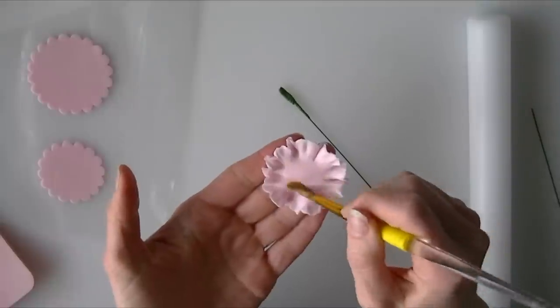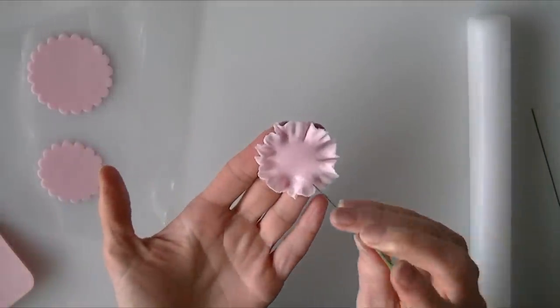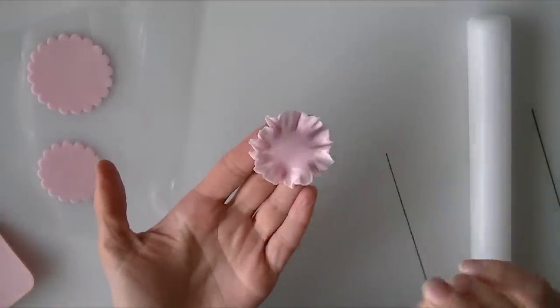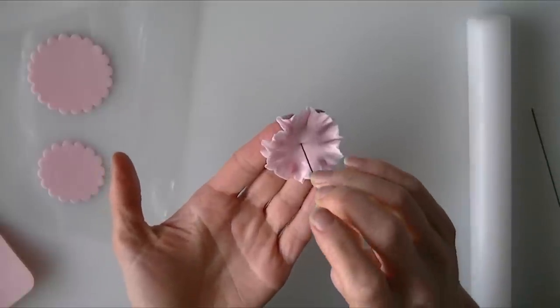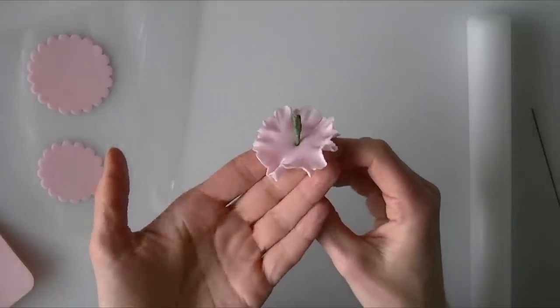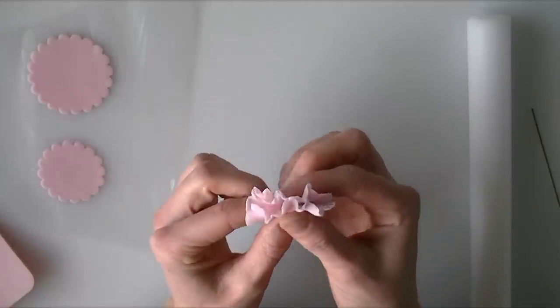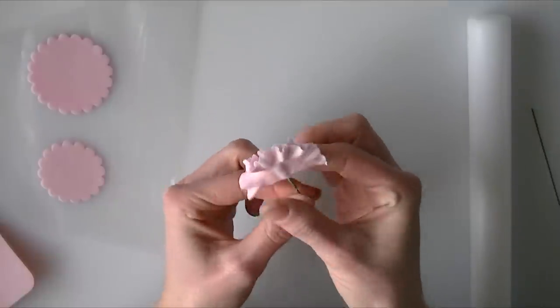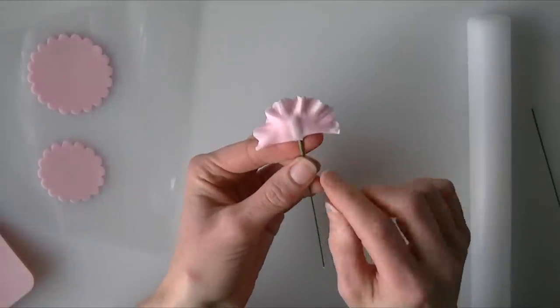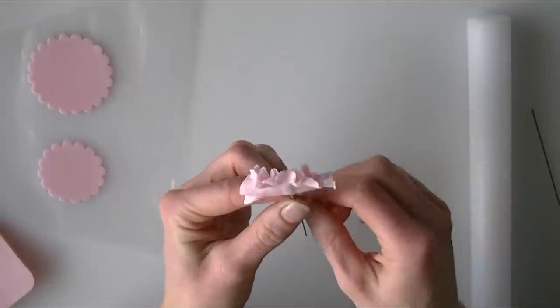So I am going to place a little bit of water in the center. I don't want to drown it, just a small amount. You can use edible glue if you prefer. Now taking the bottom of my wire I am going to push that through and then I am going to fold my flower over like that. So you will see where the wire is in the center there, but from the top you should not be able to see through to the wire.